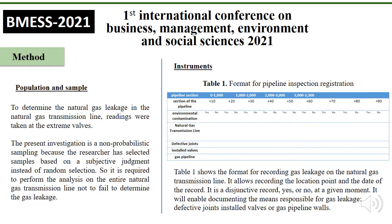Methodology. The population and sample are determined by the natural gas leakage in the natural transmission line grid, taking extreme measurements. The present investigation uses non-probabilistic sampling because the researchers selected samples based on subjective judgment instead of random selection. It is required to perform an analysis of the entire natural gas transmission line in order to determine the gas leakage. The investigation lasted 24 months, making records every two months. Consequently, 12 records were made in the present research.